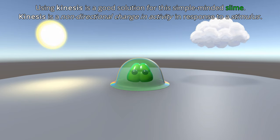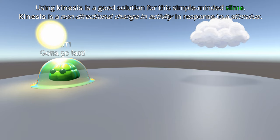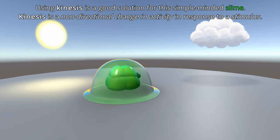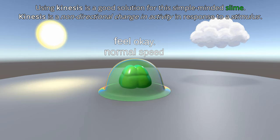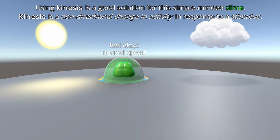What it can do though is use kinesis. Kinesis is a non-directional change in activity in response to a stimulus. What I mean by this is it can detect if its own body is hot and then maybe move more, but it doesn't actually see heat or detect heat and go away from it. Kinesis is a non-directional change. It's never away or towards a stimulus.